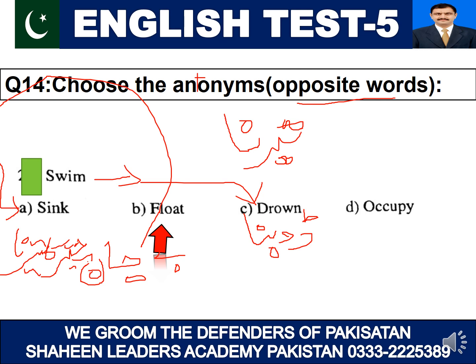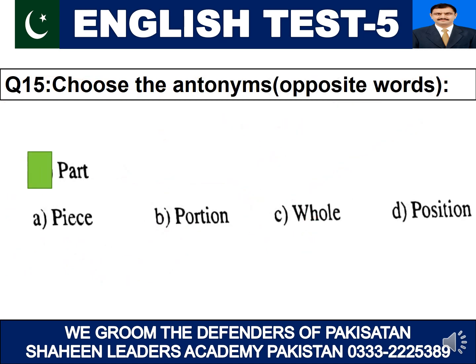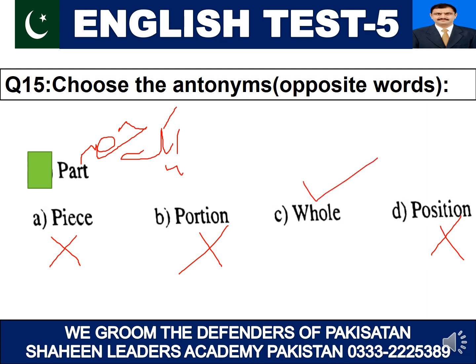Sorry — there was a small clerical mistake where 'float' was placed instead of 'drown.' The correct answer is 'drown.' Please do not follow the arrow pointing to the wrong option. Let's proceed to question number 15: choose the antonym of 'part.' Part means one portion — a section of a complete thing. 'Piece' is a small fragment; 'portion' is also a section; 'position' means a condition or state. 'Whole' means entire, complete, everything, all. The correct answer is option C — 'whole' — for question number fifteen.